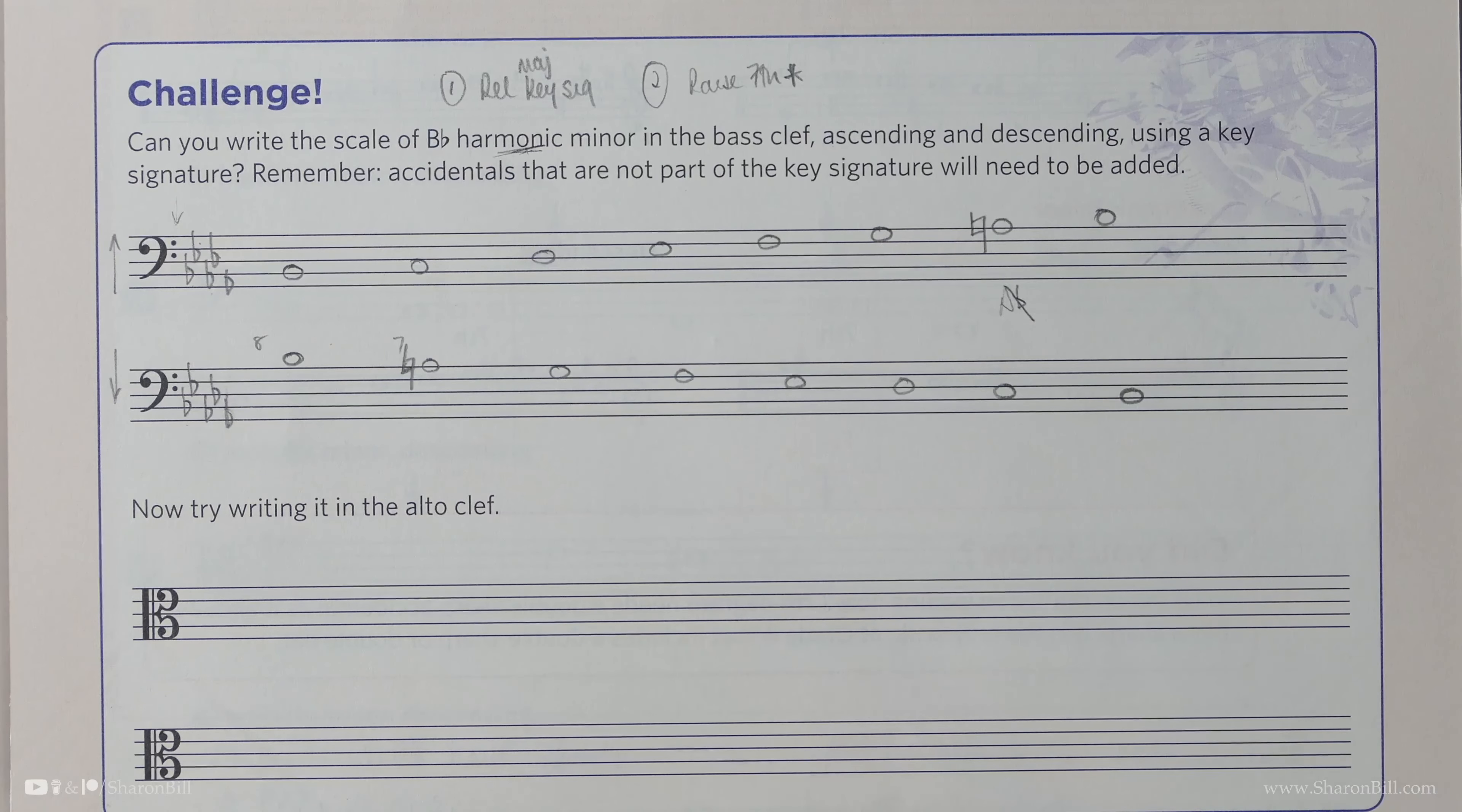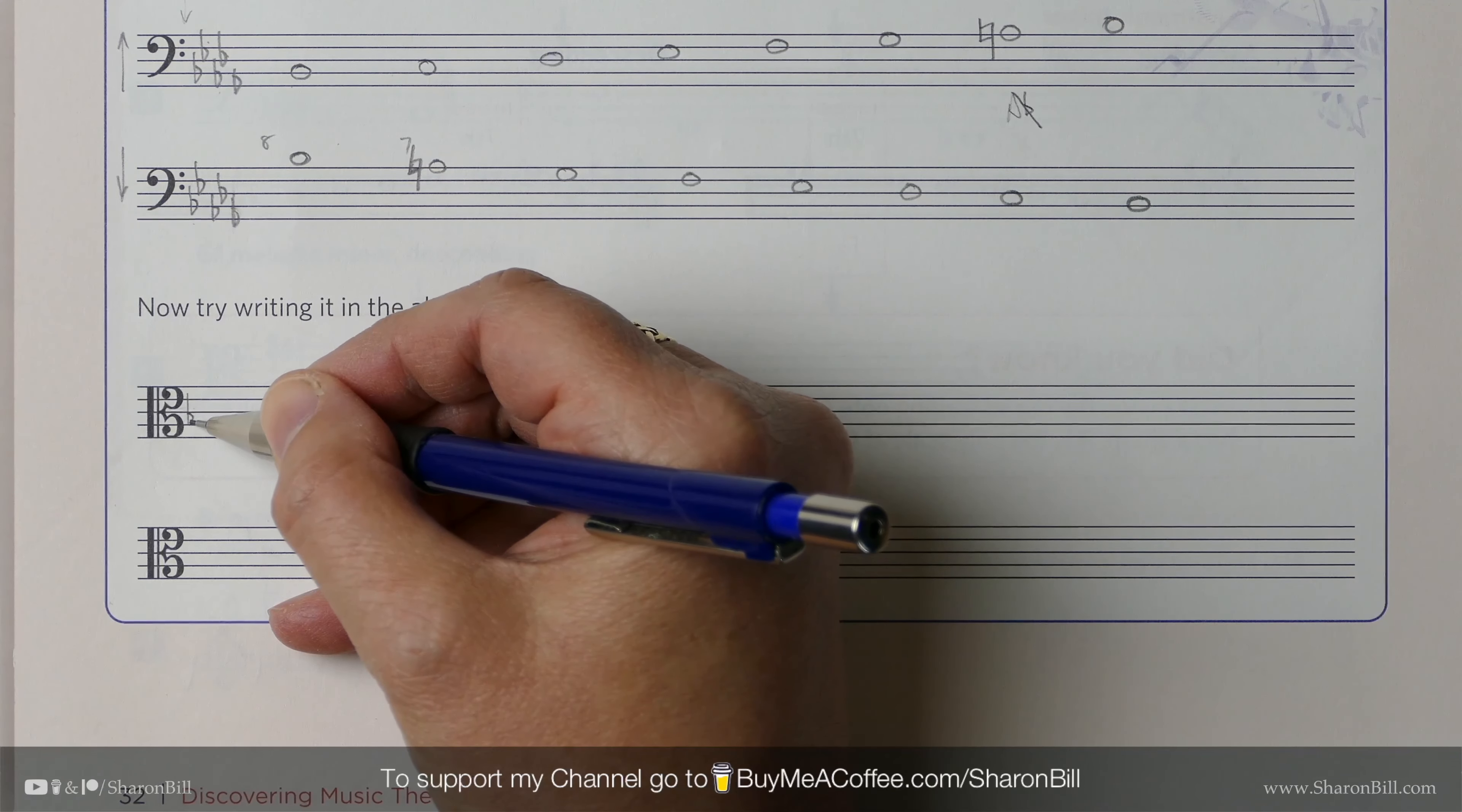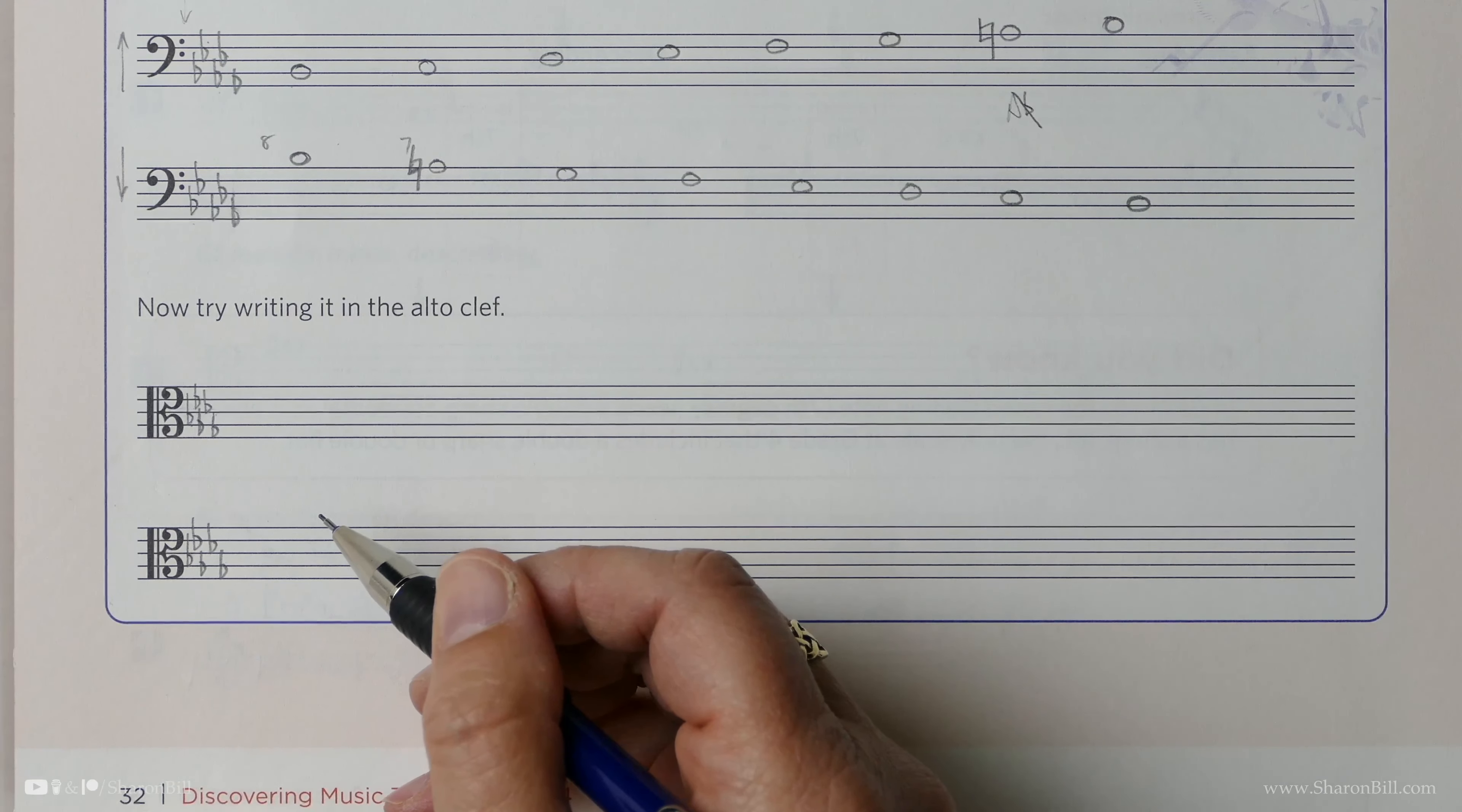And then we're asked to write it in the alto clef. So we've done all of the thinking. We just need to perhaps take a moment to make sure we position everything correctly in this clef that we may not be accustomed to. So let's transplant the key signature here. Basically, when we're going from bass clef to alto clef, it looks like everything's gone up a step. B-flat is now the space here below that C line. B-flats, E-flats, A-flats, D-flats, C, B, A, G-flats. That's it. I'm going to do that now while I'm still thinking about it here as well. B-flats, E-flats, A-flats, D-flats, G-flats. And so that's most of the work done now.